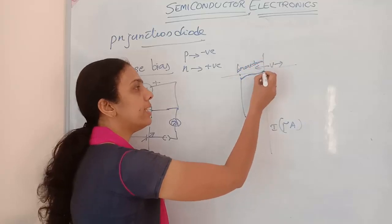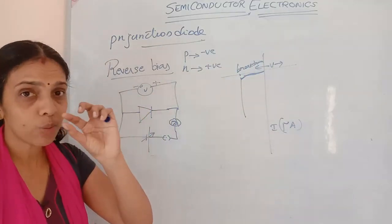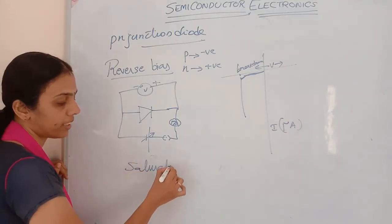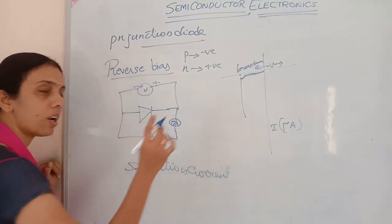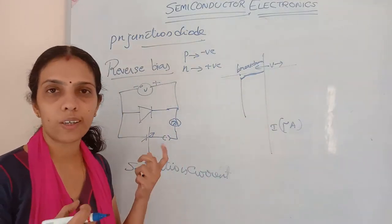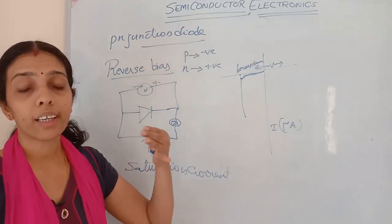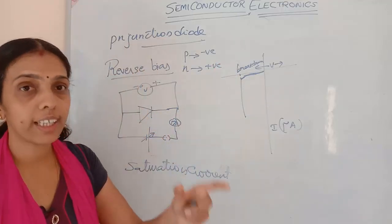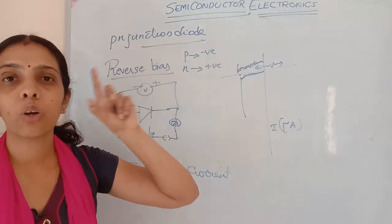The small amount of current that flows with increasing applied voltage, before breakdown, is called the saturation current. It is saturated and produced due to minority carriers. The voltage at which the current suddenly increases sharply from this saturation level is called the breakdown voltage.